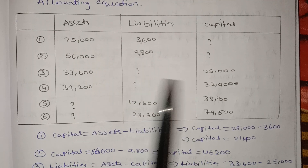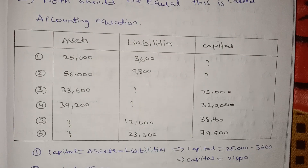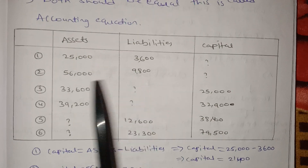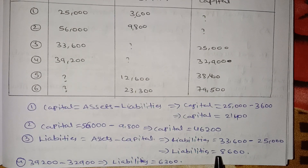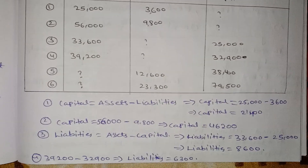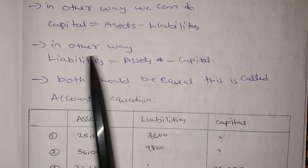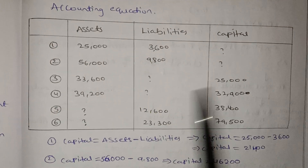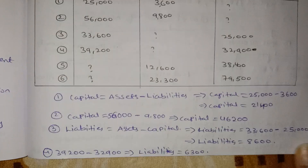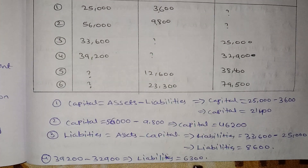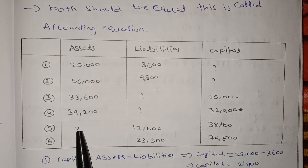Now we have a question mark for liabilities. Liabilities equals Assets minus Capital. Liabilities equals 33,600 minus 25,000 equals 8,600. Another example: Liabilities equals 39,200 minus 32,900 equals 6,300.